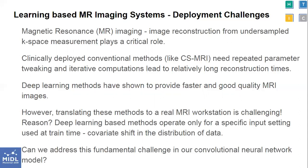Recently, deep learning-based algorithms have shown to provide faster and good quality MR image reconstruction. The fundamental challenge in translating these methods to an MRI workstation in a clinical setting is that these methods heavily depend on training data in learning the mapping from undersampled images to fully sampled target images. They suffer from a covariate shift in data distribution, wherein a model trained using images from a particular distribution tends to perform poorly on data from a different distribution. So, can we address this fundamental challenge?